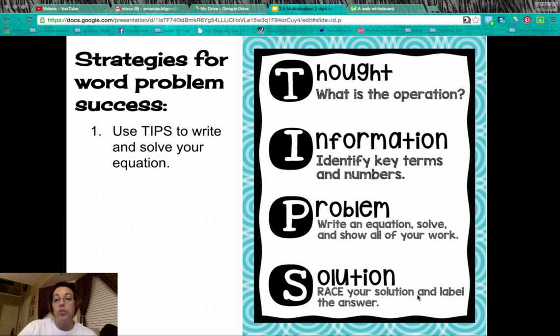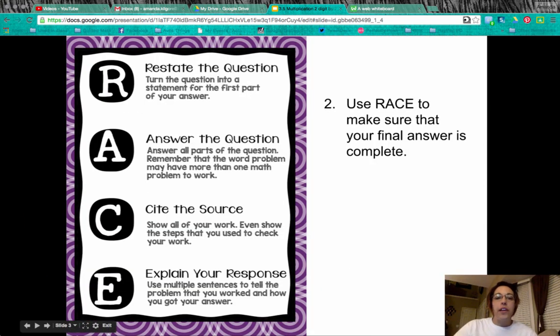I want you to race your solution and label the answer. Our second strategy for word problem success is to use race to make sure that your final answer is complete. So race starts with restating the question. You want to turn the question into a statement for the first part of your answer. A stands for answer the question. You want to answer all parts of the question. And remember that the word problem may have more than one math problem or operation to work to correctly solve it.